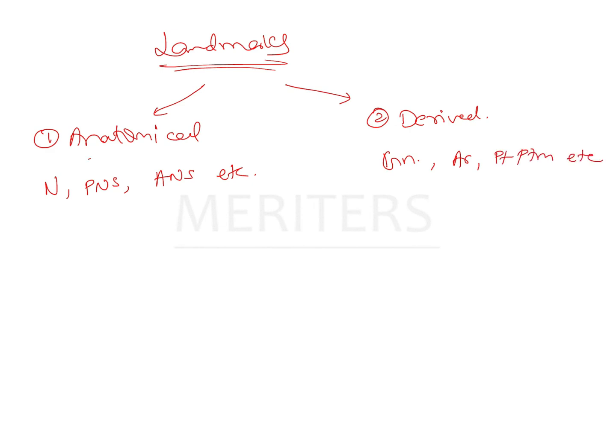Between the anatomical and the derived landmarks, the anatomical landmarks can be marked more precisely because you can see them on the radiograph representing the anatomical structure, whereas the derived landmarks are obtained arbitrarily and secondarily.